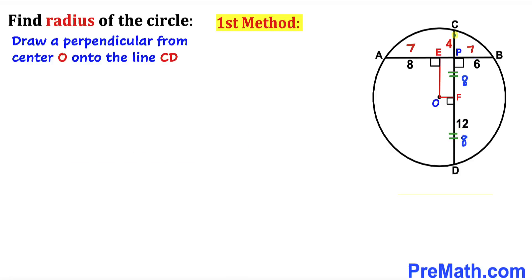From observation, we know line segment CF is 8 units and segment CP is 4. Therefore segment PF is going to be 8 minus 4, which gives us 4 units. So line segment PF turns out to be 4 units.